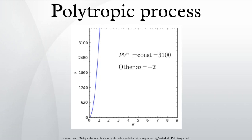A polytropic process is a thermodynamic process that obeys the relation, where P is the pressure, V is specific volume, N is the polytropic index, and C is a constant.